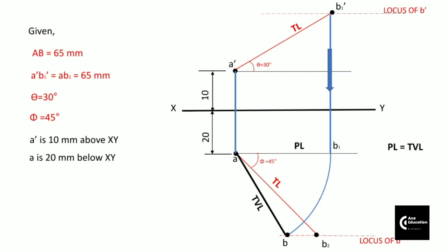After getting point B, draw the projector of point B vertically upward until it meets the locus of point B' in front view. That point becomes point B', and you can directly draw line A'B' which is the front view of the line.